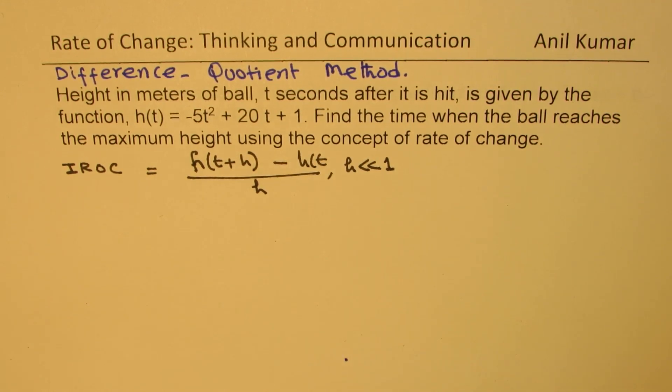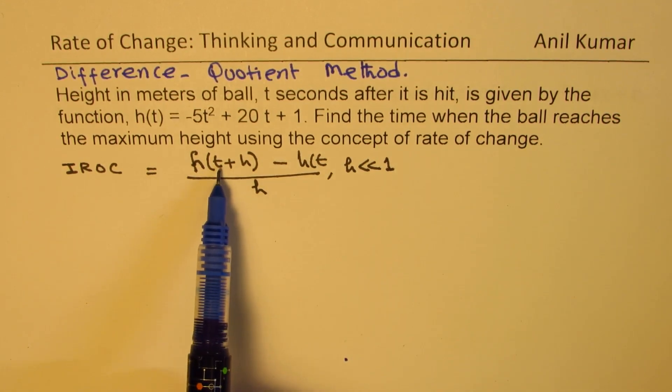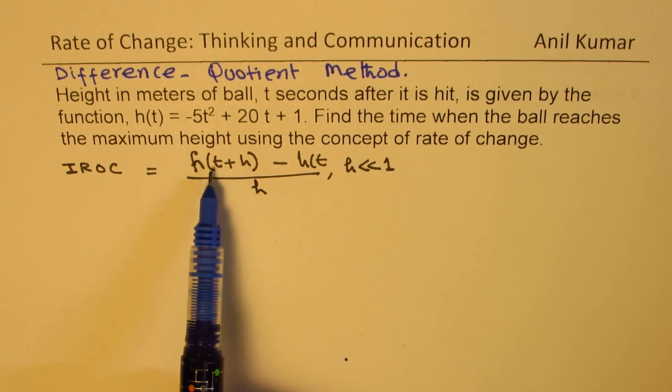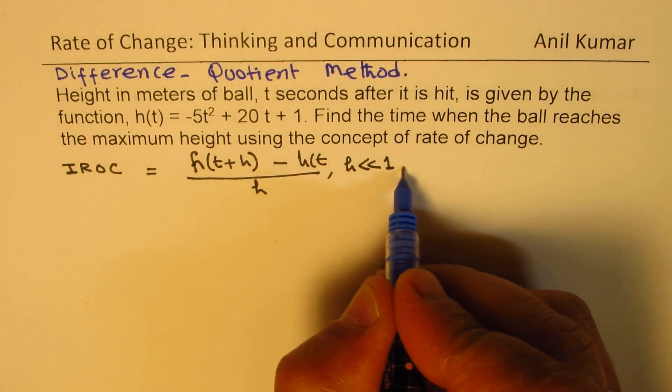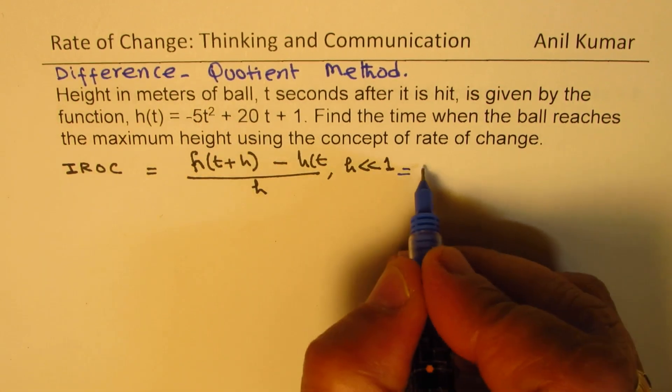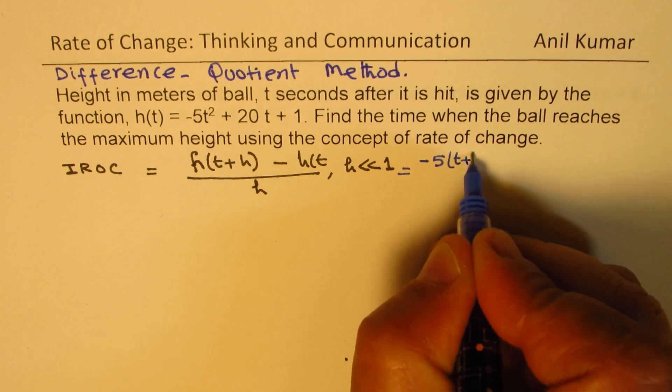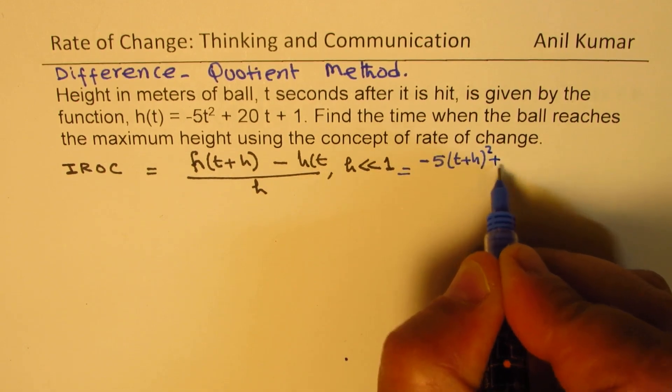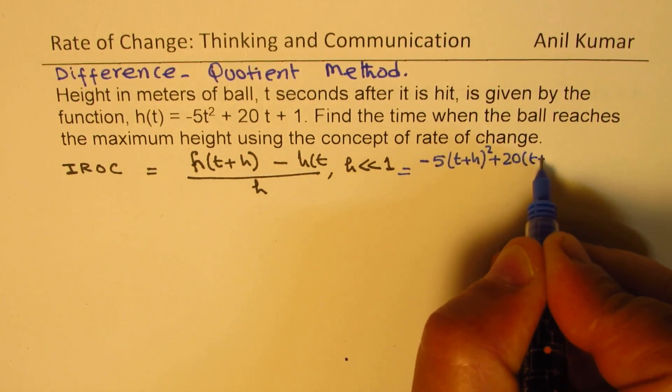So when I say t plus h, that means a point which is very close to t, right? Now we can substitute t plus h here, so we get minus 5(t + h)² plus 20 times (t + h)